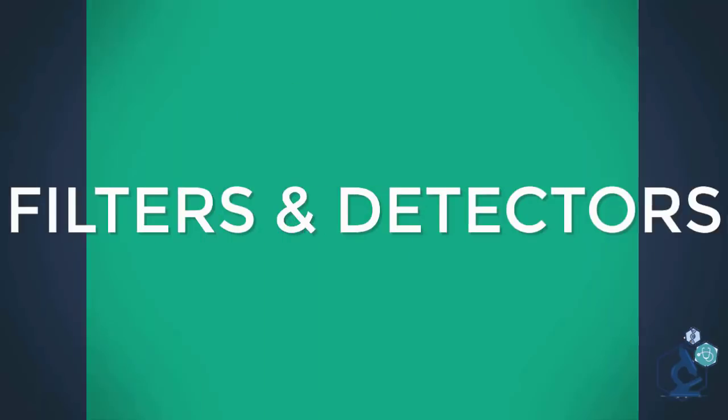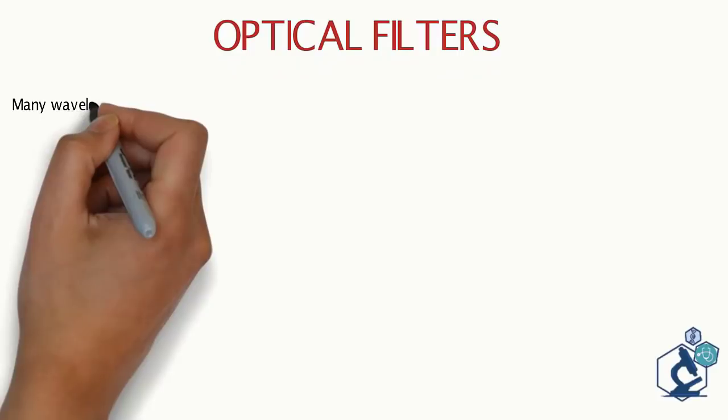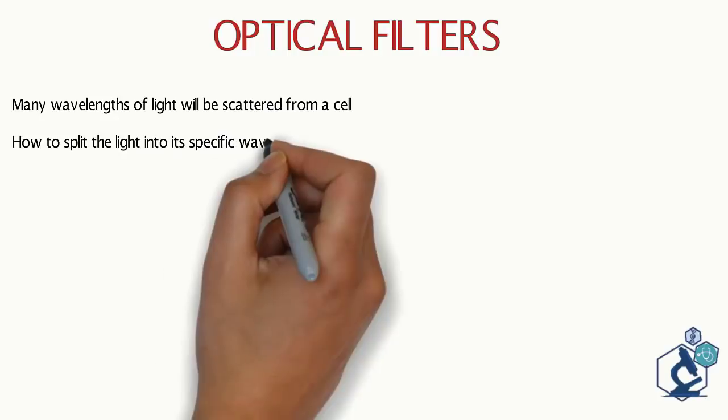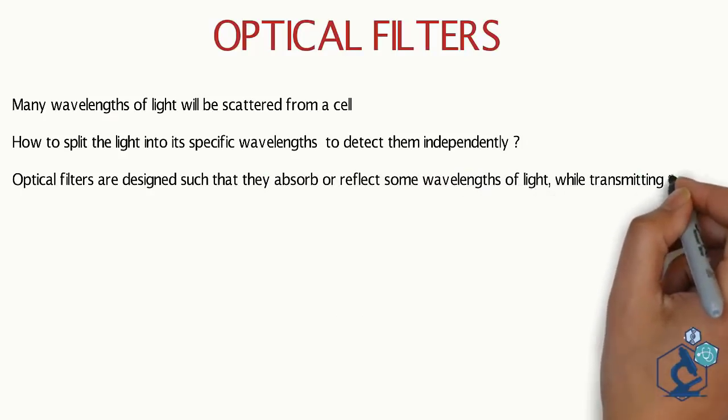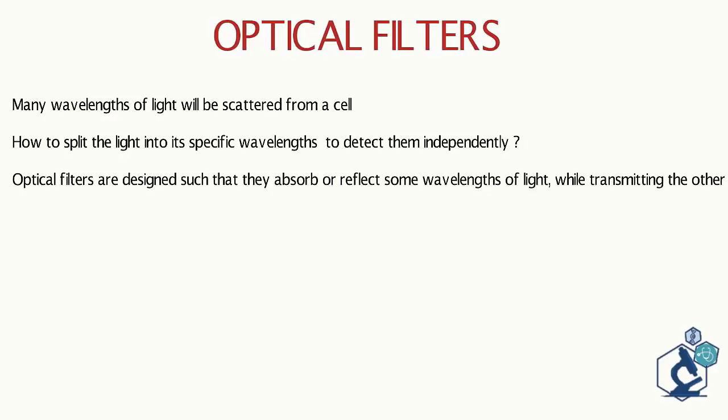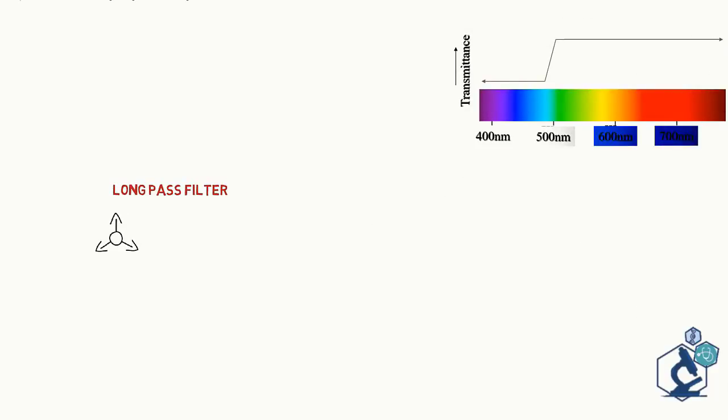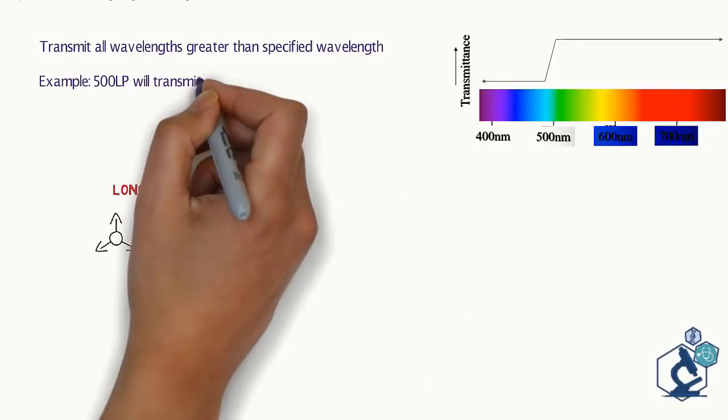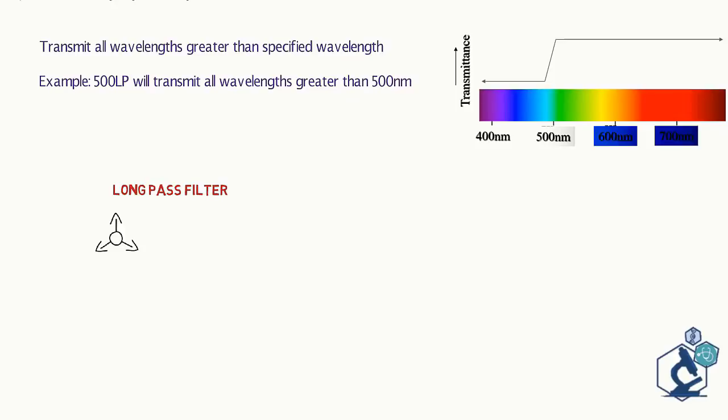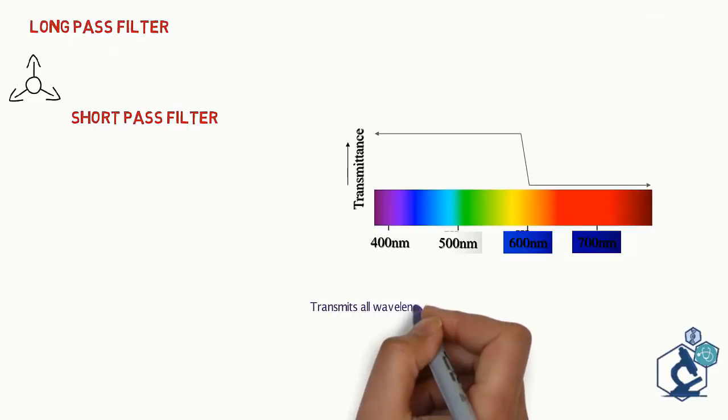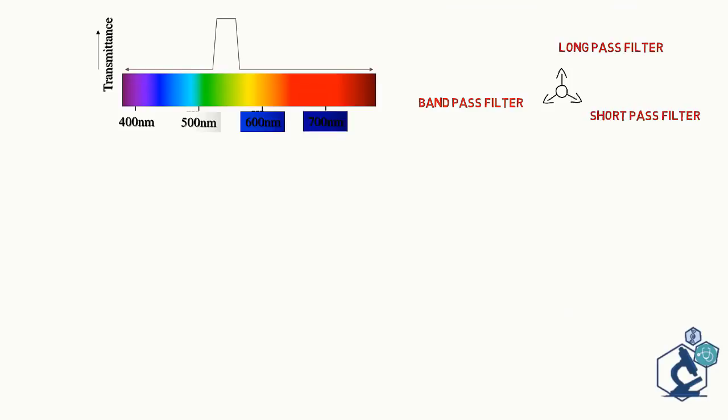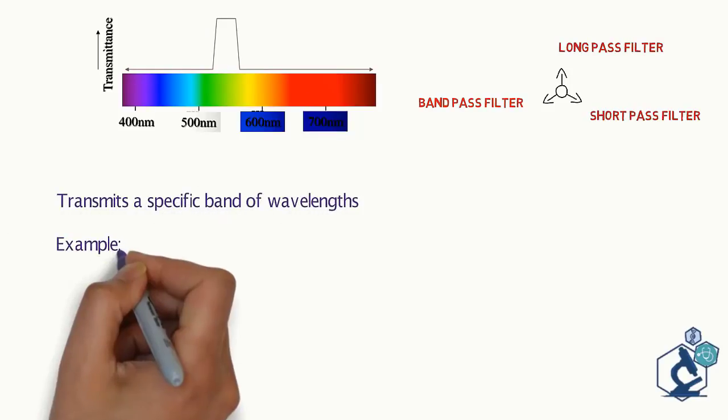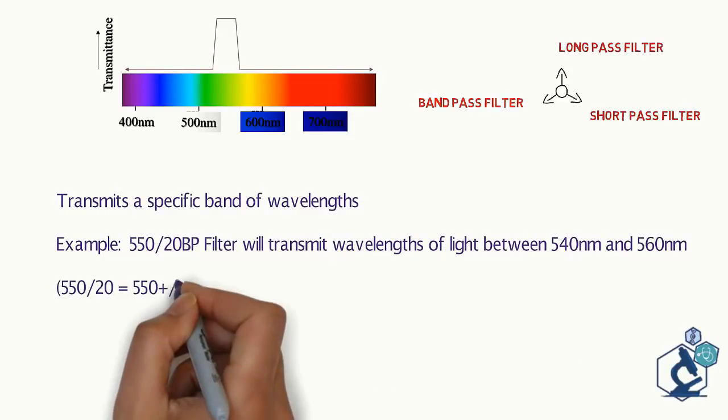Now coming to filters. Many wavelengths of light will be scattered from a cell. We need a way to split these lights into its specific wavelength in order to detect them independently. This is done with the help of filters. Optical filters are designed such that they absorb or reflect some wavelength of light while transmitting the other. Three types of filters are generally used: long pass filter, short pass filter, and band pass filter. Long pass filters transmit all wavelengths greater than the specified wavelength, e.g. 500 LP will transmit all wavelengths greater than 500 nm. A band pass filter transmits a specific band of wavelength, e.g. 550 x 20 BP filter will transmit wavelengths of light between 540 nm and 560 nm.